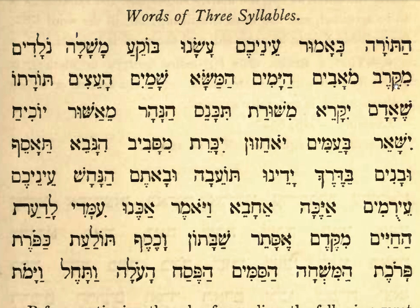Here we have a doubled letter, so it's not 'mi-kereb' but 'meek-kereb', 'meek-kereb'. Mo-abeem, mo-abeem. Doubled yud: hi-yameem, hi-yameem — two doubled letters here.